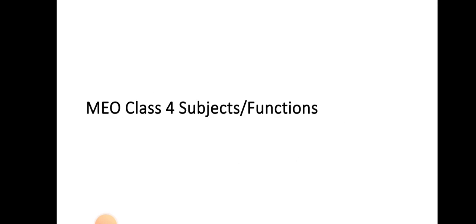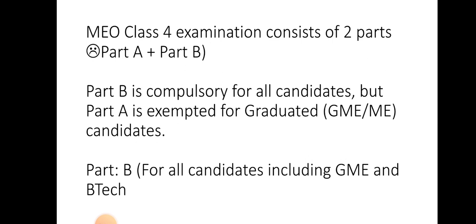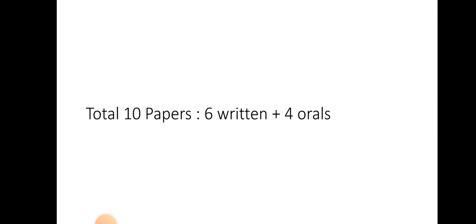For the MA Class 4 exam subjects, the exam is divided into 2 parts — Part A and Part B. Part B is compulsory for all candidates, including B.Tech and GME candidates. Part A is an exception for GME category candidates — they do not need to appear for it. In Part B, there are a total of 4 oral exams and 6 written papers.